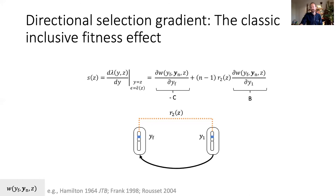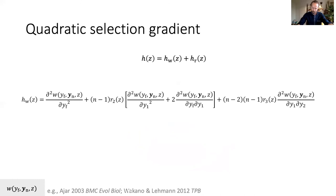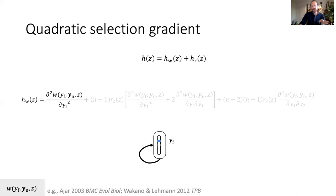Perhaps less well known than the directional selection gradient is the quadratic selection gradient h, which recall tells you whether a population will remain monomorphic or become polymorphic. We find that this term h can be decomposed as the sum of two terms. The first consists of various second-order effects of changes in traits within the focal patch: the second-order effect of a trait change in the focal on its own fitness — as in a well-mixed population — and other terms due to spatial structure, including the effect on focal fitness of a change in a neighbor's trait and the effect of coupled changes in the focal and neighbor, both multiplied by relatedness r2.